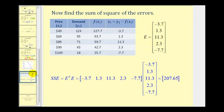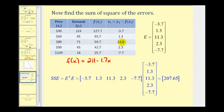Now we're also asked to find the sum of the squares of the errors. To do this, I recommend creating a table where the first column is the given x values, the second column is the given y values, and the third column is the function values from the regression equation f of x equals 211 minus 1.7x. The difference between y sub i and f of x sub i is the error, which we use to form matrix E. The transpose of matrix E times matrix E gives us 207.65, which is the sum of the squared errors.